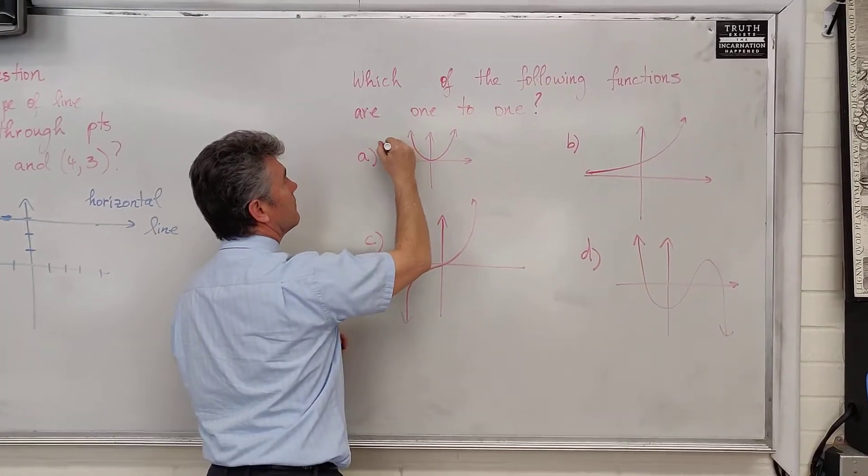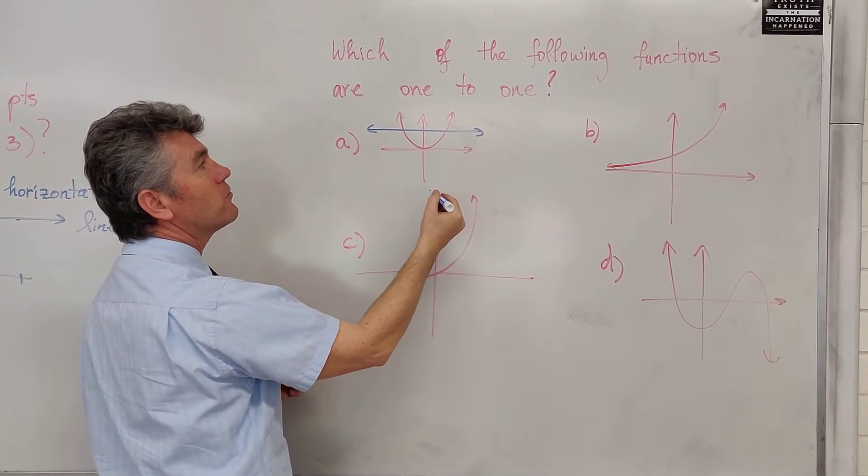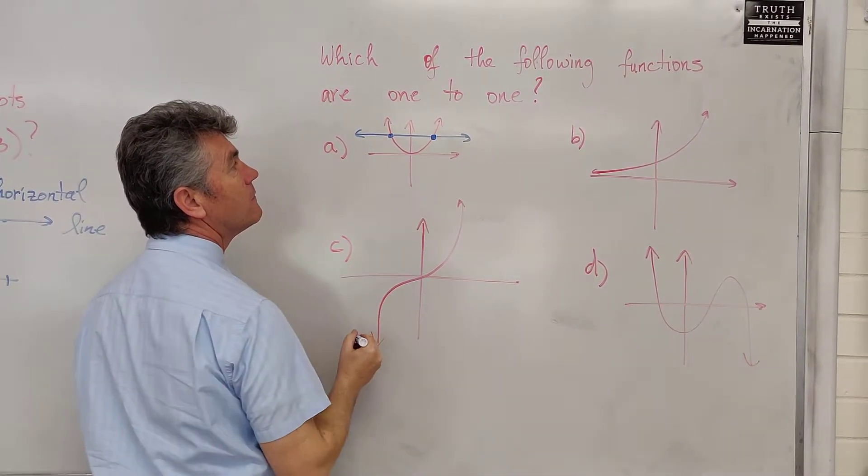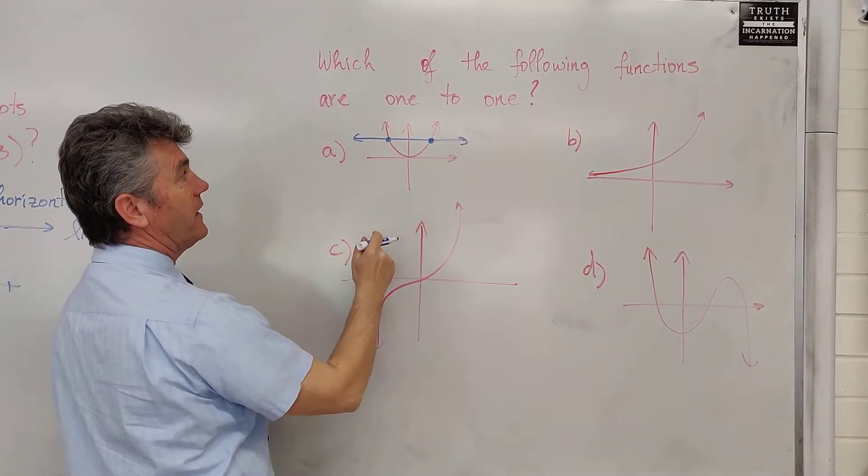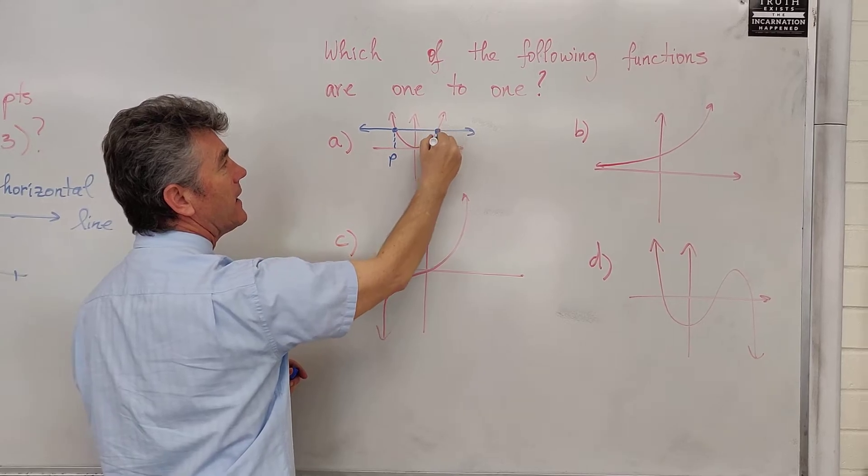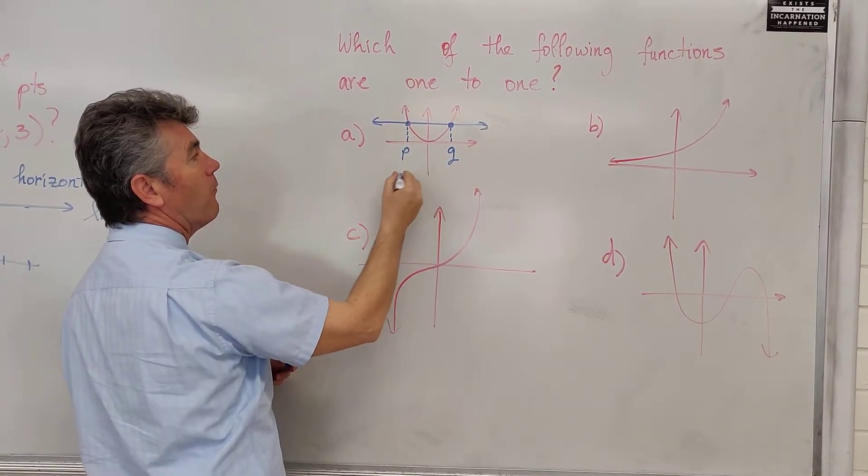Horizontal line test. I'm going to draw a horizontal line. Look at that. It intersects the graph in two points. Let's say that this is P and this is Q. Well, what's the problem?